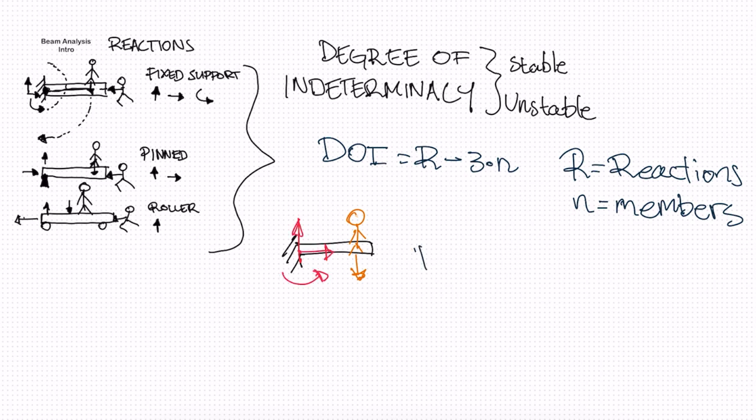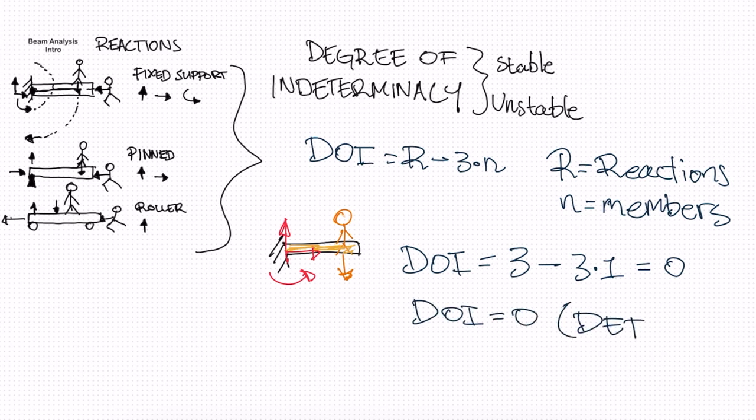So we have three reactions. So our DOI is equal to three minus, and we have one member. So it's three times one, and that's equal to zero. So if we have a DOI equal to zero, that means the beam is determinate.